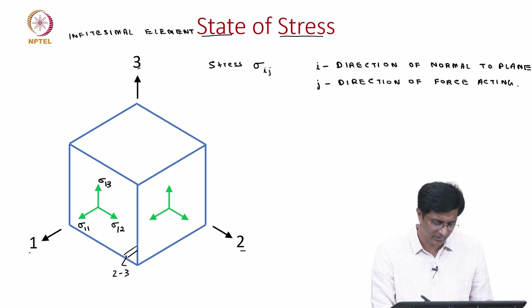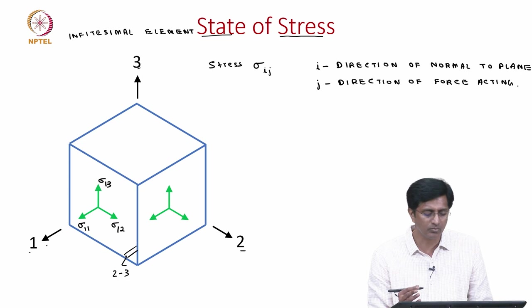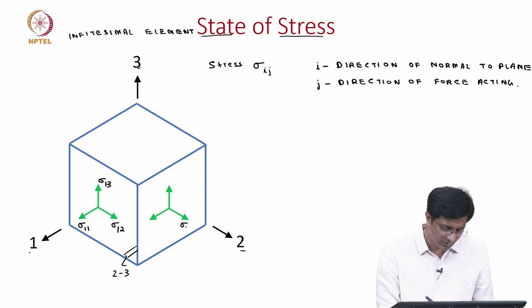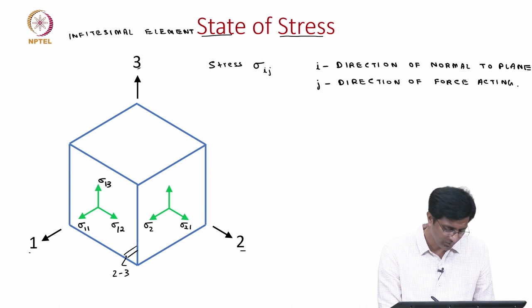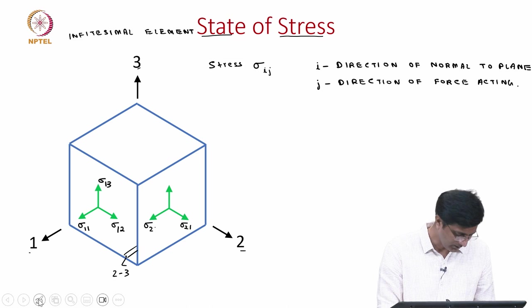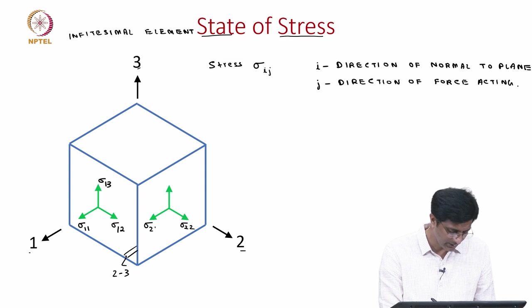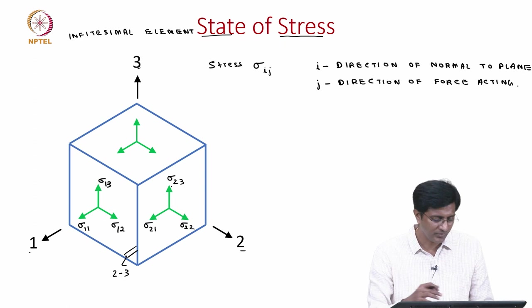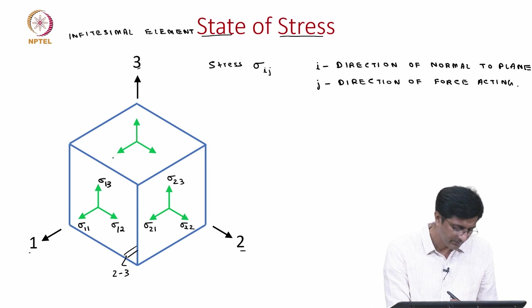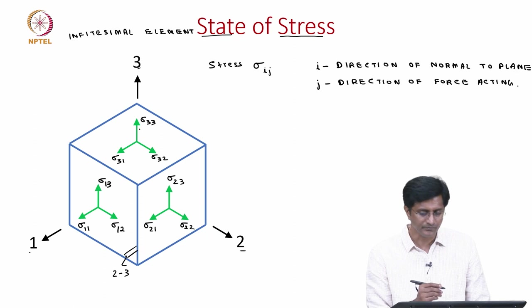Now let us apply the same thing for a different plane. Looking at a plane parallel to 1-3: the direction of the normal to this plane is direction 2. So we start with sigma_21 for the force along direction 1, sigma_22 for the force pointing in direction 2, and sigma_23 for the plane 2 with force in direction 3. The same thing can be written for the third plane: sigma_31, sigma_32 and sigma_33, starting with 3 representing the plane.